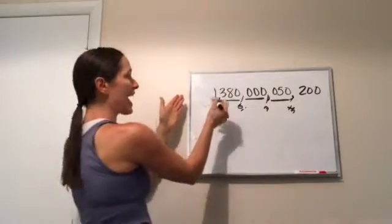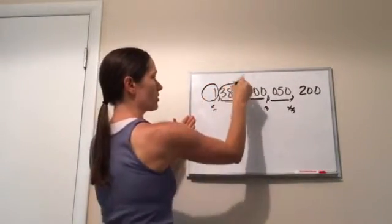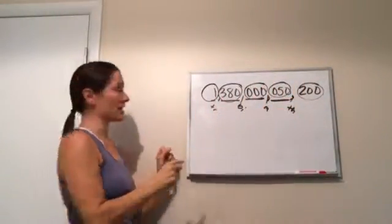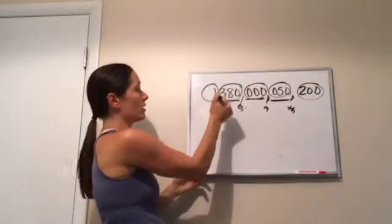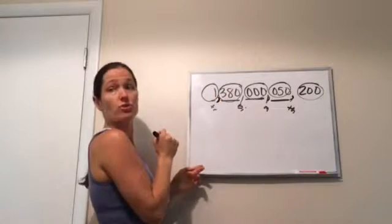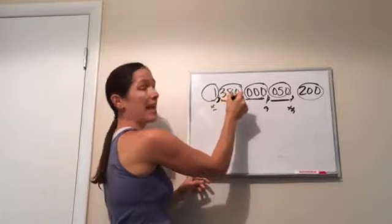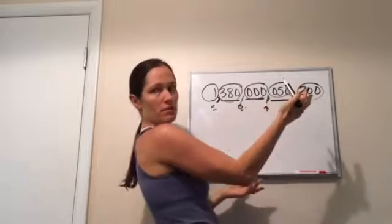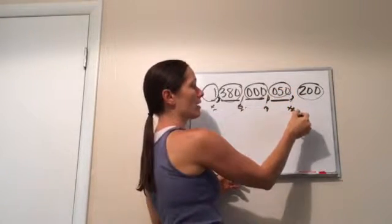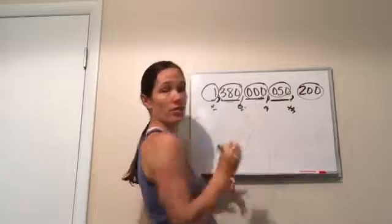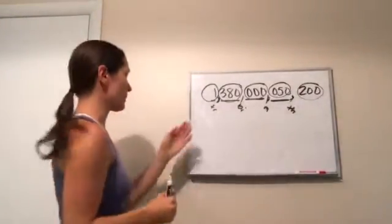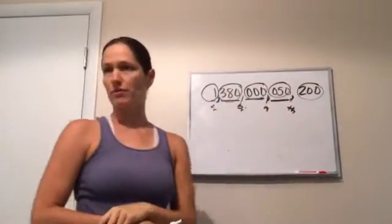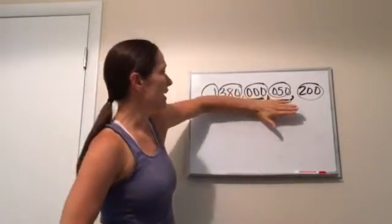Now you say the groups. So you see how I grouped them? So watch how I read this one. One. That comma means trillion. Three hundred eighty. Billion. Billion. And then there's, I don't say anything because it's zero, zero, zero. Fifty thousand, two hundred. So if I were to say this out loud I would say one trillion, three hundred and eighty billion, fifty thousand, two hundred. That's me reading that number.